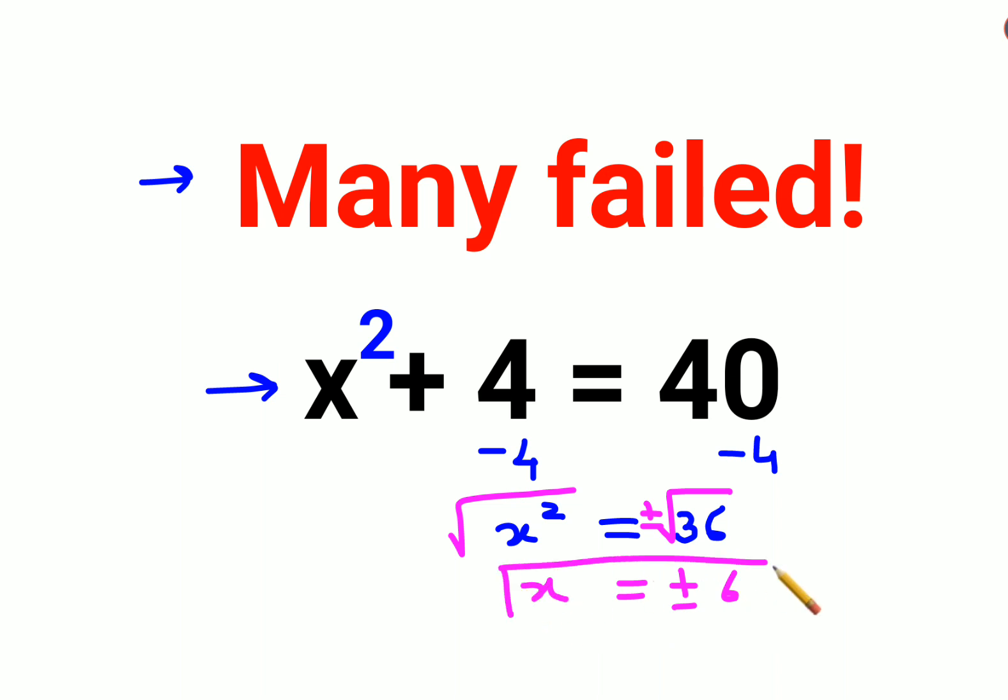So we can say the value of x is either plus 6 or minus 6. Why like that? Please understand, if you have a variable involved, when you want to take square root on both sides, the square root will always come with a plus minus sign.